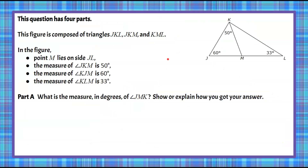Here's our question today. This question is going to have four parts. This figure is composed of triangles JKL, JKM, and KML. In the figure, point M lies on side JL. The measure of JKM is 50 degrees, the measure of KJM is 60 degrees, and the measure of KLM is 33 degrees.